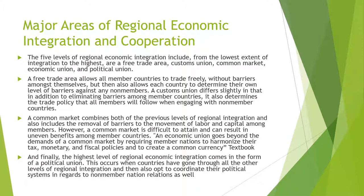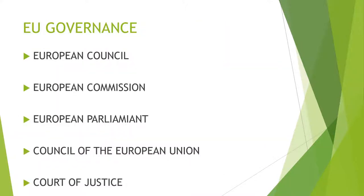Finally, the highest level of regional economic integration is a political union. This occurs when countries have gone through all other levels of regional integration and also opt to coordinate their political systems in regards to non-member nation relations as well. Now let's talk about the governance of the European Union. Similar to how the United States has legislative, executive, and judicial branches, European governance is broken down into several major areas: the European Council, European Commission, European Parliament, the Council of the European Union, and the Court of Justice.